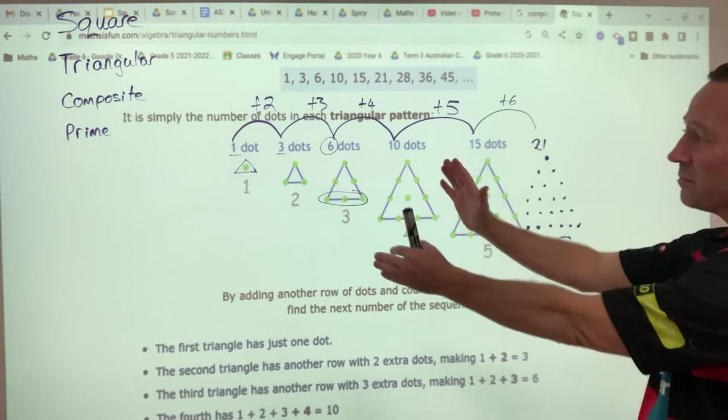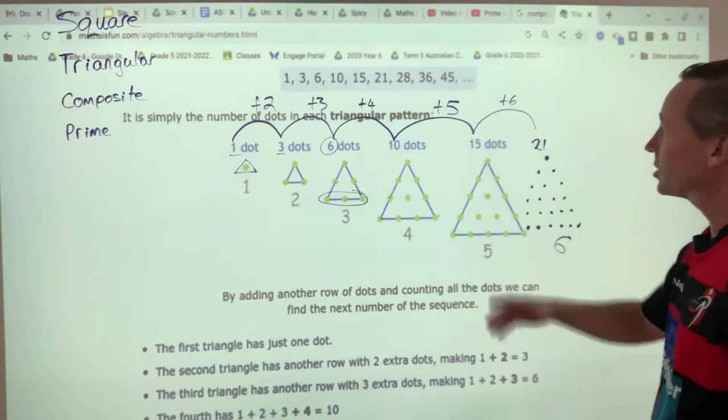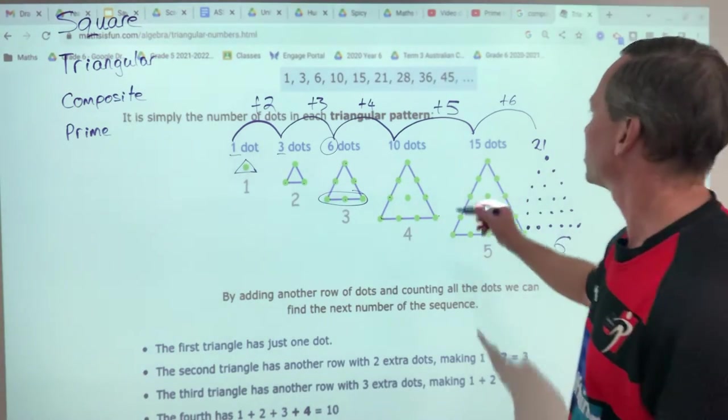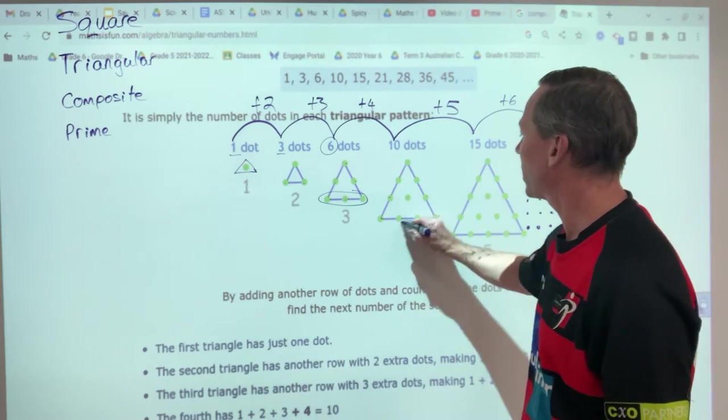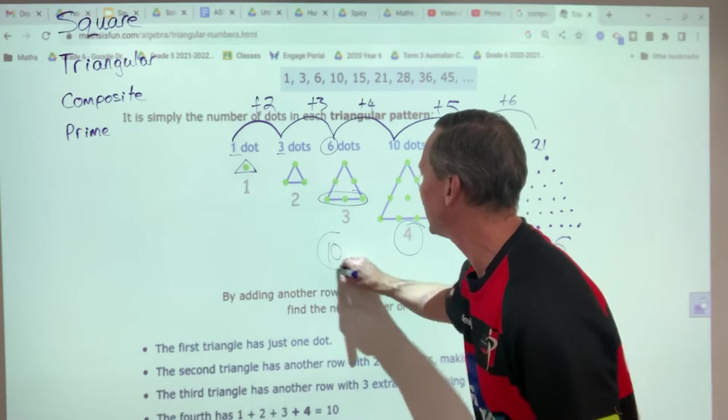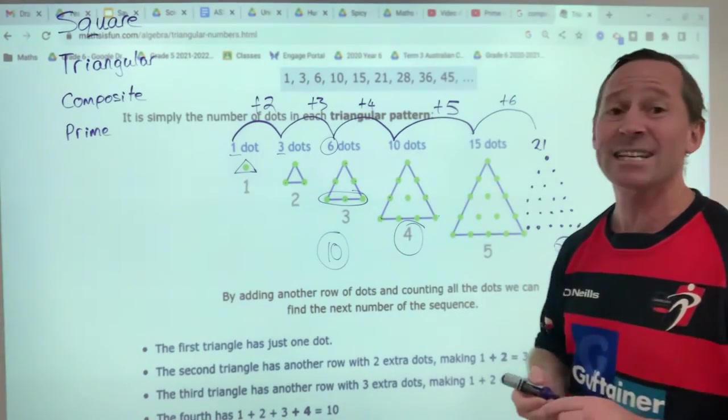There are other ways of doing it, but this is a nice, simple way. So this is a triangular number. Looking at this, if I just choose the fourth triangular number, number ten. Okay, so I'm looking at ten. Fourth triangular number is ten.